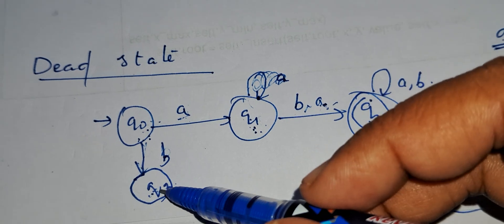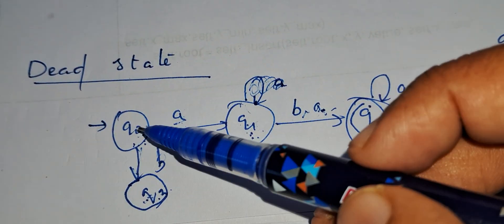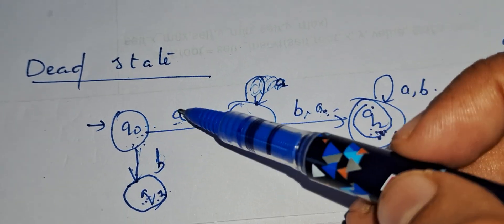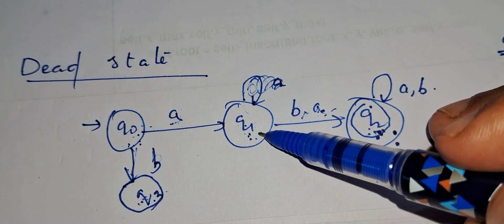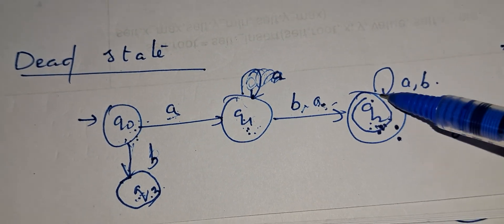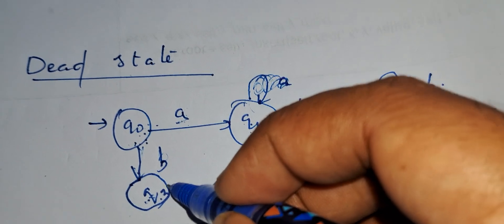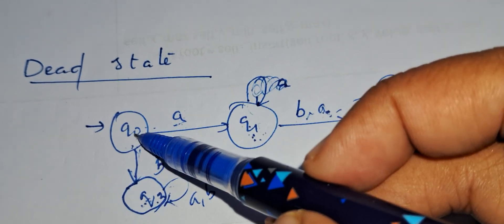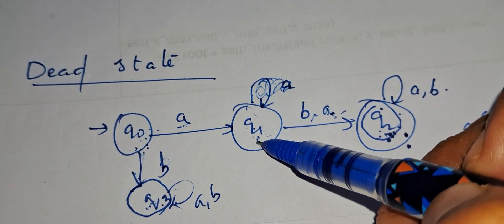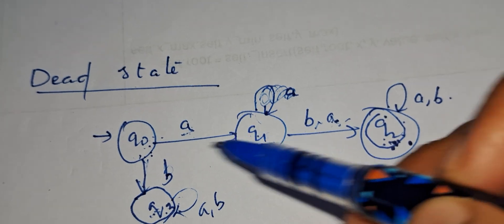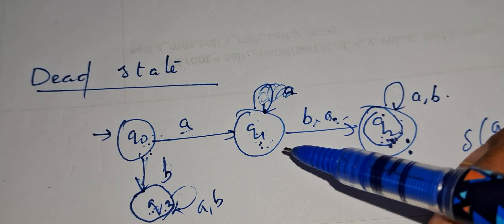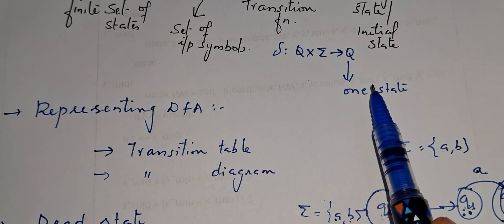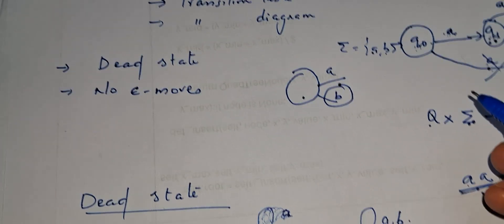While constructing a DFA, you need to consider two cases. One: whenever you take a state, show the transition on all input symbols — show transition of 'a' and 'b' from Q0, Q1, Q2, and Q3. Two: from any state on a particular input symbol, it should go to only one state — Q0 on 'a' goes to Q1 only, not to any other state. In the next video, I will explain how to construct a DFA.